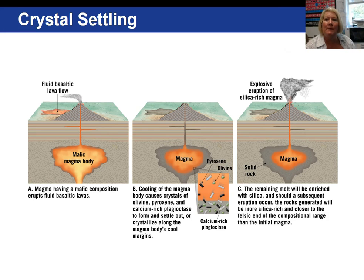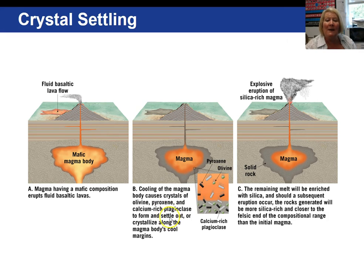Here are the steps in crystal settling. We start with a basaltic magma body erupting at the Earth's surface as a lava flow. With continued cooling, olivine, pyroxene, and calcium-rich plagioclase feldspar crystallize and settle to the bottom of the chamber. The remaining magma then has a different composition — it is more silica-rich and closer to the felsic end of the compositional range than the parent magma.